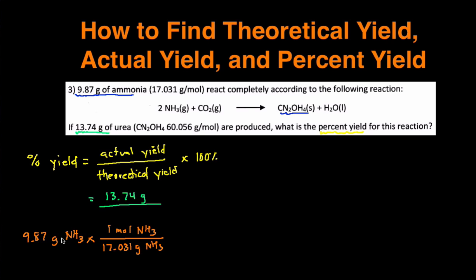So when you do that, the grams of ammonia cancels out. Next, we're going to do a mole-to-mole conversion to get it into the moles of the desired product, which is urea. So I'm going to have moles of ammonia on the bottom, so the units cancel out. I'm trying to get to moles of urea, so that goes on top. Moles of CN2OH4.